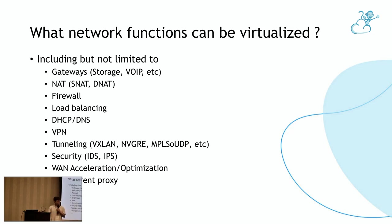Many network functions can be virtualized: gateway, source NAT, destination NAT, firewall, load balancer, port forwarding, VPN, and so on.